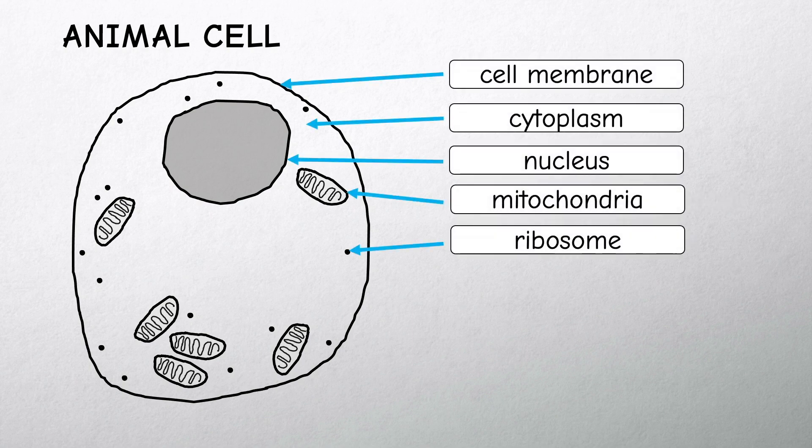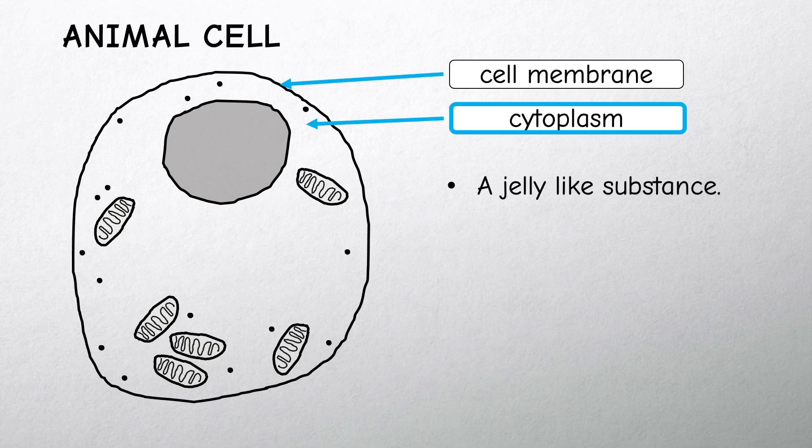The cell membrane also encloses the thick jelly-like cytoplasm, which is where most of the cell activity like reactions occur.